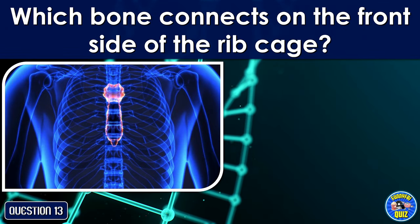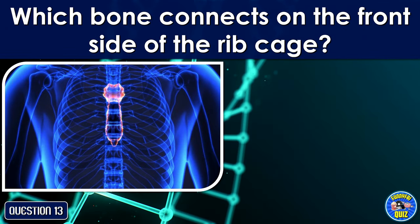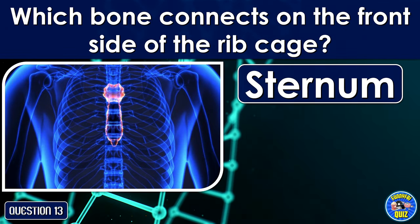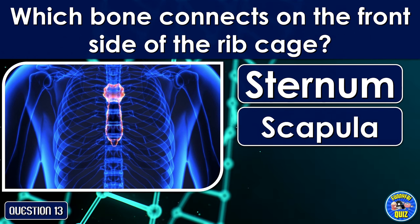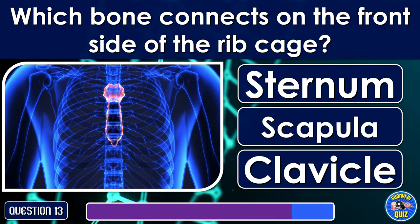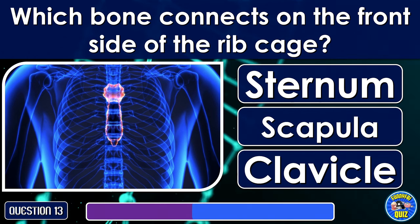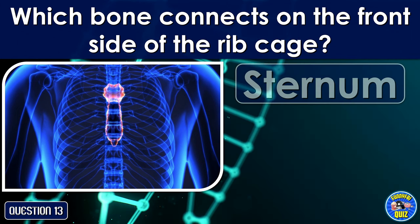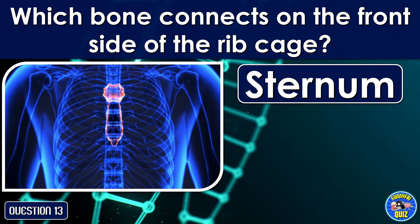Which bone connects on the front side of the rib cage? The sternum.